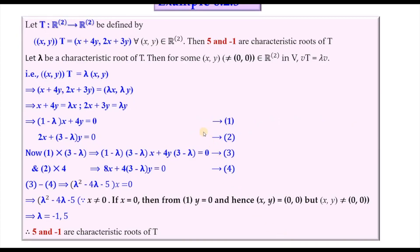Now we have an example for a characteristic root of a linear transformation. We can determine that 5 and minus 1 are characteristic roots of T. This can also be done in terms of matrices in section 6.3, but here we proceed with just the linear transformation. We consider T from R² to R² defined by any ordered pair (x, y) mapped to (x + 4y, 2x + 3y) for every element (x, y) in R².